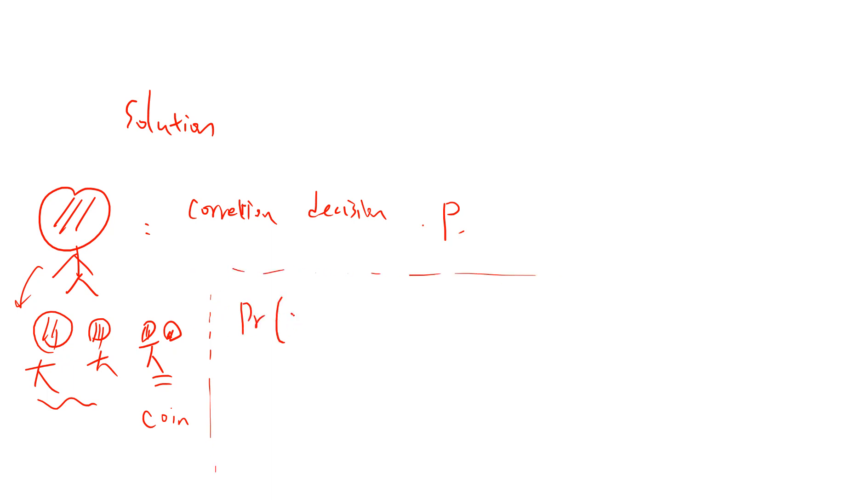There are several cases. The first case is the first two guys make the correct decision, so correct and correct. Then we don't need to care about the third man because the result will already be correct. This has probability p squared (p times p) because this is independent. And the second case...